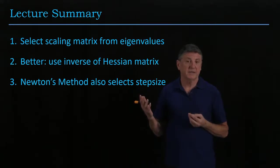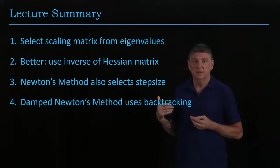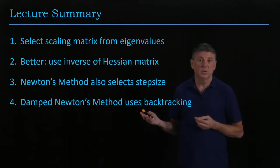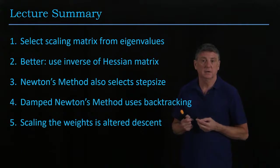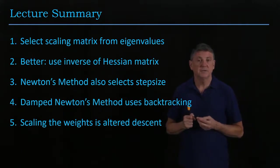Newton's method automatically calculates a step size, so that's one thing that the user doesn't have to provide. Damped Newton's method requires a step size estimate from the user and then employs backtracking. And all of these methods are altering the steepest descent direction by using a symmetric positive definite matrix.